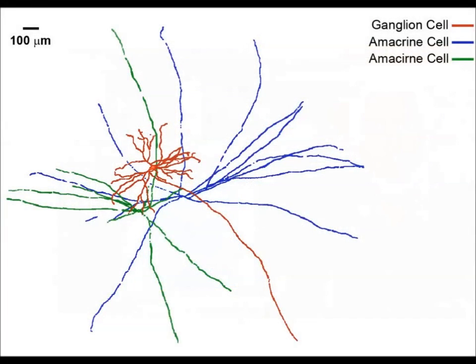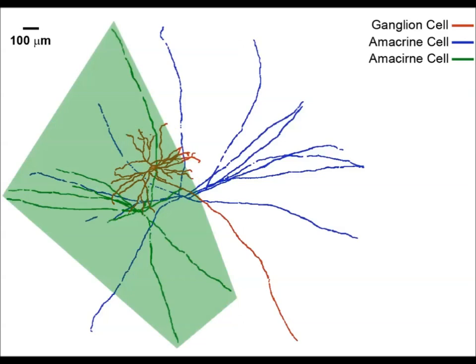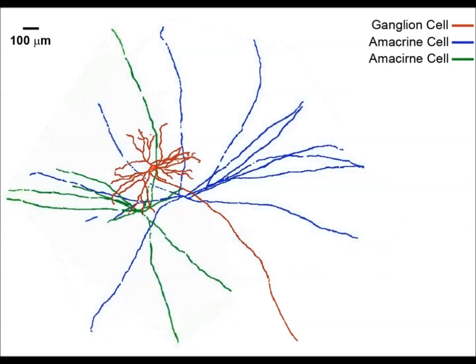Using monosynaptic circuit tracing techniques, we were able to visualize the anatomy of the ganglion cell and its presynaptic partners. In red is the ganglion cell, while in green and blue are two connected wide-field amacrine cells. As you can see, they are very large, making them well-suited to mediating surround inhibition.